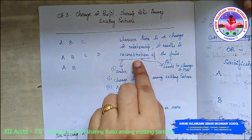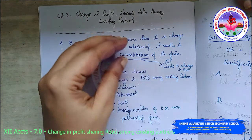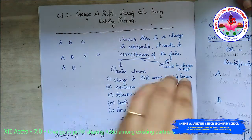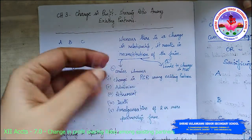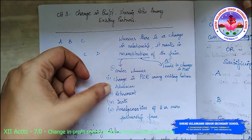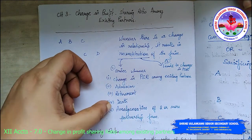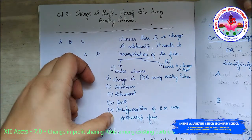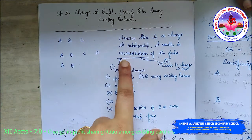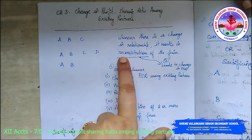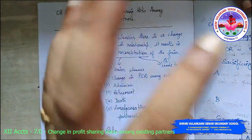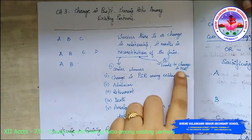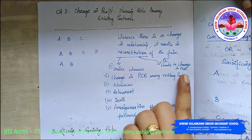Whenever this reconstitution arises — whether due to change in profit sharing ratio, admission, retirement, death, or amalgamation of two or more partnership firms — it leads to reconstitution. And whenever there is reconstitution, there will be a change in the profit sharing ratio.